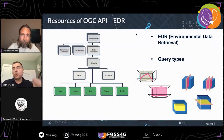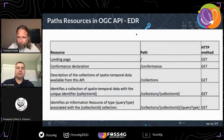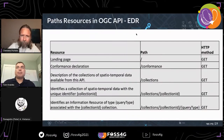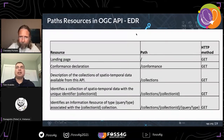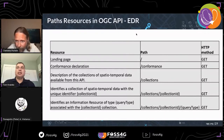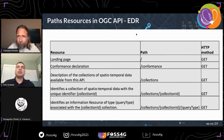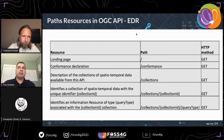Discovery and access is a core component of the specification. Core endpoints include the landing page, the conformance declaration, a listing of collections, and a single collection description. Query types include position queries, cube queries, trajectories, corridors, and various queries around single or multi-dimensional data.